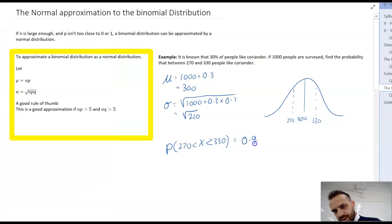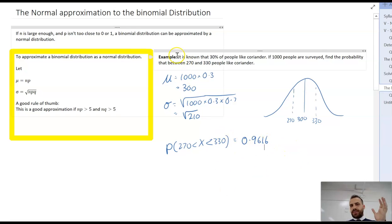0.9616. Obviously, you'd copy and paste anything that you put into your calculator. But there is our answer. If you've got a binomial distribution question, and the sample is large enough, and p isn't too close to 0 or 1, you can use the normal distribution to find your answer. Let's go.